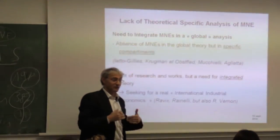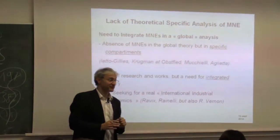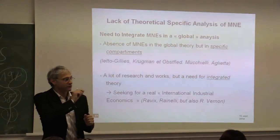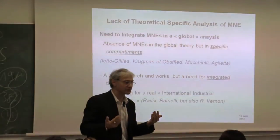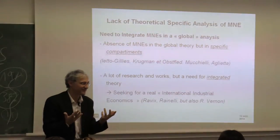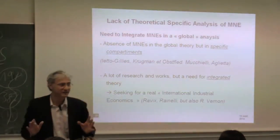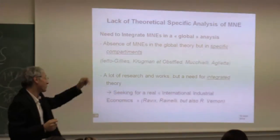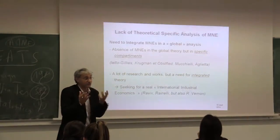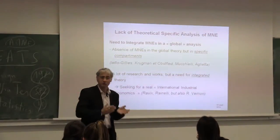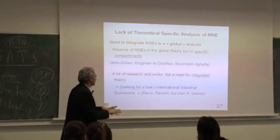For example, Krugman made works on multinationals, but in his handbook with Obstfeld there is almost no word about multinationals — just one sentence saying multinationals do not have importance as a mechanism in the economy. Also in France, Aglietta omits multinationals completely. That is a paradox: there are a lot of books on multinationals, but not an integrated theory. I think Raymond Vernon and some French economists had made steps in this direction but were omitted.